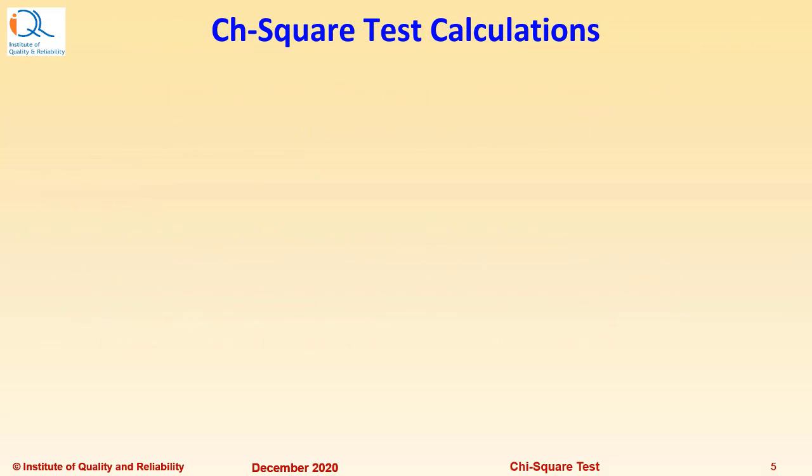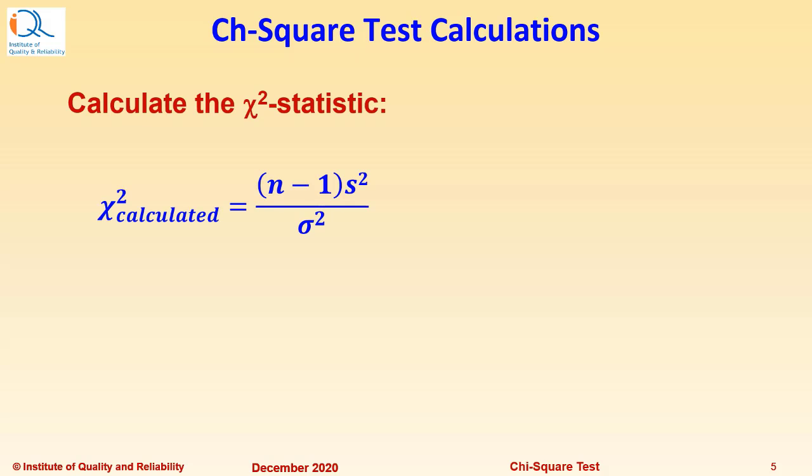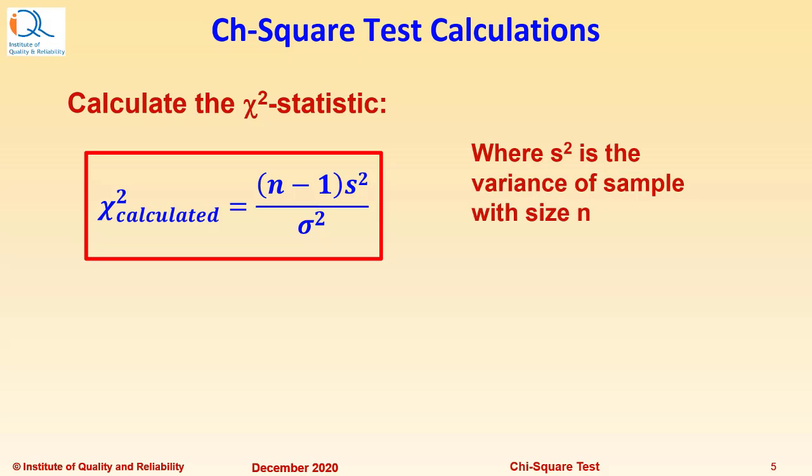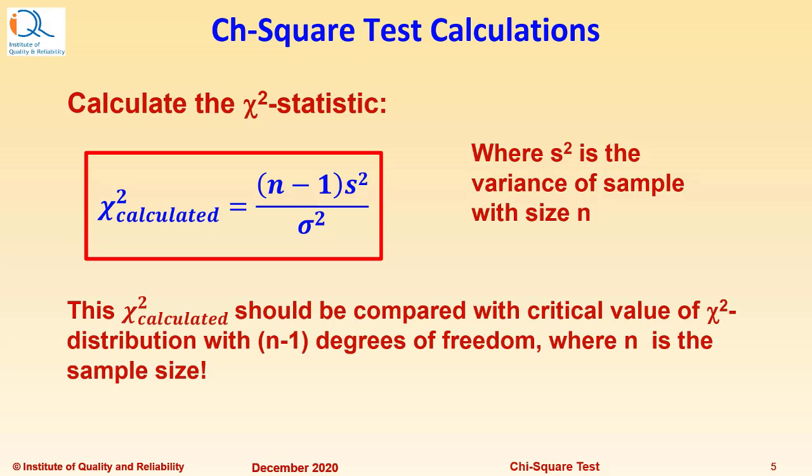Let us understand the calculations involved in Chi-Square Test. Calculate the Chi-Square statistic with sample variance and sample size N. The Chi-Square calculated should be compared with the critical value of Chi-Square distribution with N-1 degrees of freedom where N is the sample size.